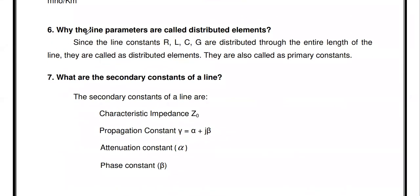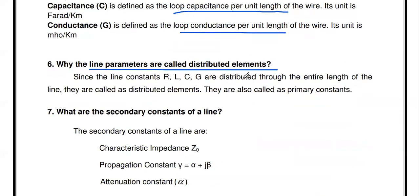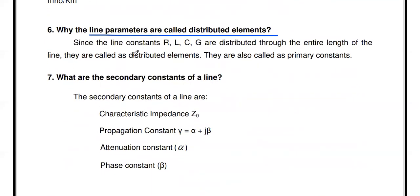Why are the line parameters called distributed elements? The line constants RLGC are distributed throughout the entire length of the line. That is why RLGC are called distributed elements — throughout the line, the resistance, inductance, capacitance, and conductance values are distributed.